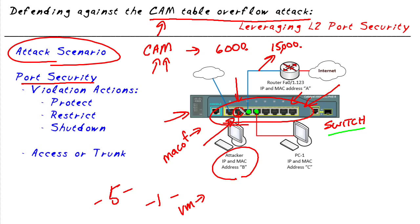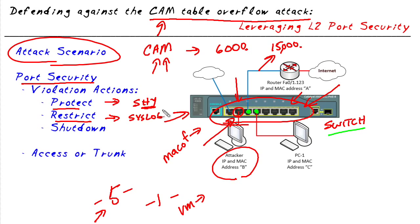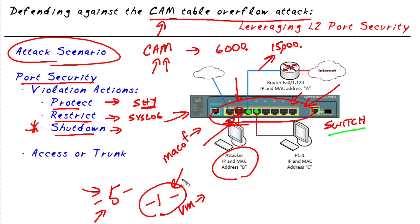Once we enable port security, we can specify what happens on a violation. The 'protect' option silently drops frames above the limit without sending syslog messages or alerts. 'Restrict' is similar to protect but does generate syslog, SNMP messages, and alerts so administrators are notified. The third and most severe option — and also the default — is 'shutdown', which puts the port into an error-disabled state so no packets are allowed until the port is manually brought back up. The default maximum MAC address count is one, and the default violation action is shutdown.